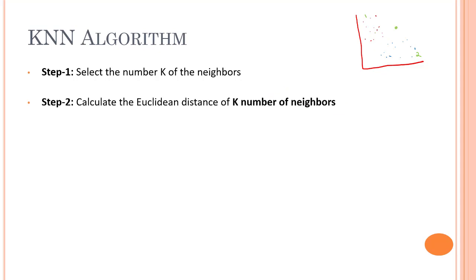If we choose K equals five, we have a new data point and we need to put it under the required category. What it will do is take the first nearest five points — so the nearest five points might be this, this, this, this, and maybe this. These are the five points that will help predict which category it belongs to.